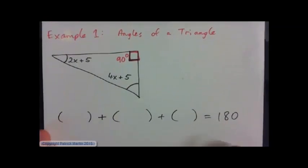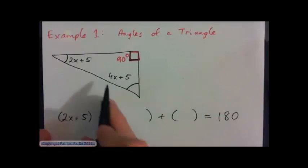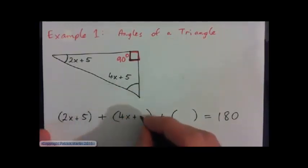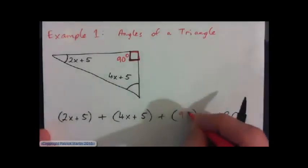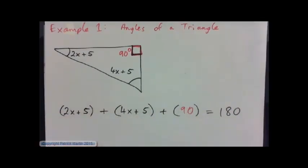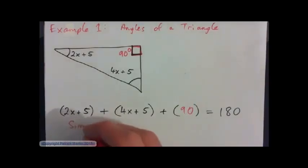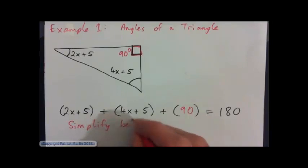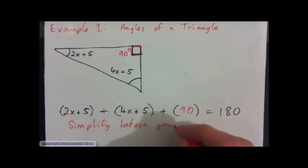The first angle is 2x plus 5, the next angle is 4x plus 5, plus 90, and they all add up to 180 degrees. Press pause and solve this equation to see if you can get the right answer. What we need to do is simplify the left-hand side before we solve it — add like terms, simplify both sides before you solve.